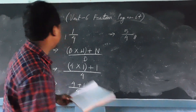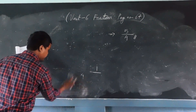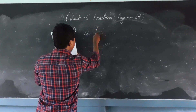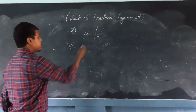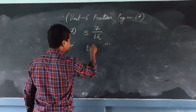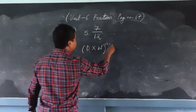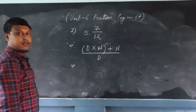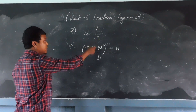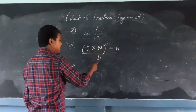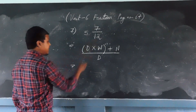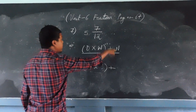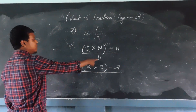Now next — I will do question number 7, which is 5 and 7/12. Same thing: write denominator into whole number, close the bracket, plus numerator, divided by the denominator. We just change the values now. We have 12 as the denominator, 5 as the whole number, close the bracket, plus 7 as the numerator, divided by 12.